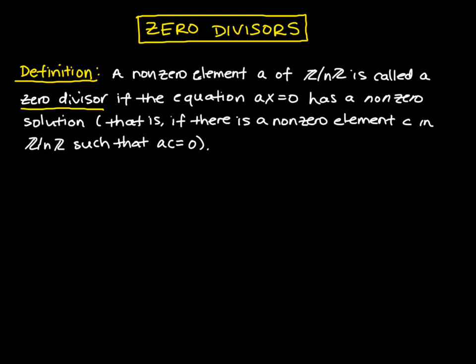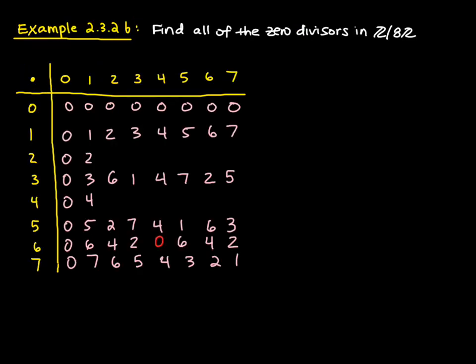Let's look at an example. We want to find all the zero divisors in Z mod 8Z. The simplest way to illustrate this is to set up a table. I've already filled in many values. The first row and column are all zero since this is multiplication. Similarly, the second row and column are just multiplying by one, so you get elements of Z mod 8Z back. Let's look at the third row where I've left some things to be filled in.